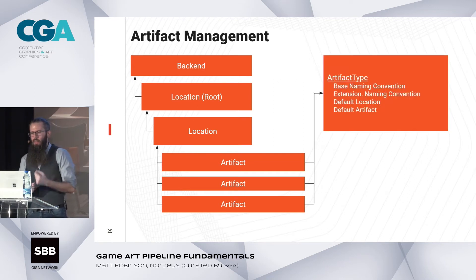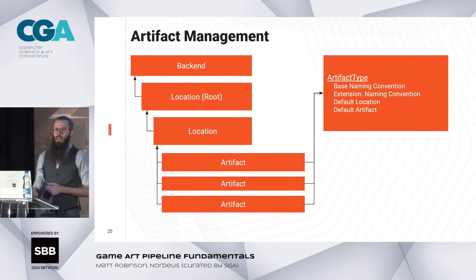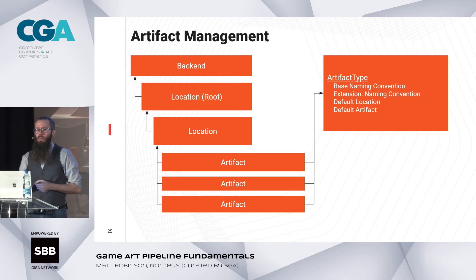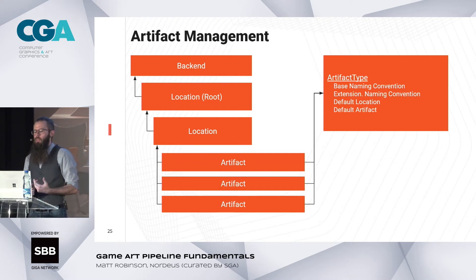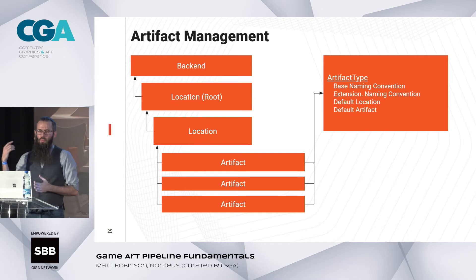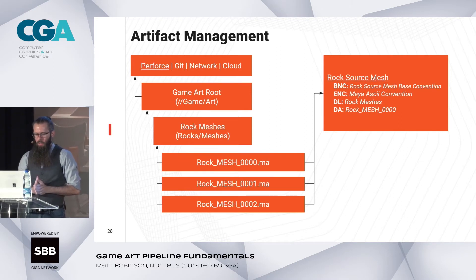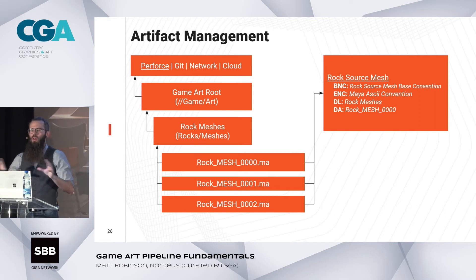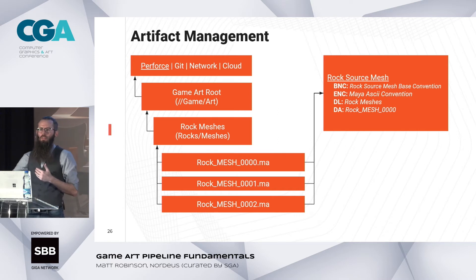Something interesting happens when we introduce an artifact type. Similar to asset type and asset, we have artifact type and artifact. We can pull in naming conventions for file names, set up a default location and a default artifact. So when I say I need a new mesh and I'm creating a new asset, I go to the rock mesh artifact type — I have information to name it, a place to put it, and a default file I can copy. Everything downstream will just start working. It's probably not going to look great, but all downstream dependencies are now unlocked.